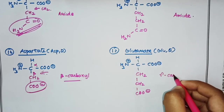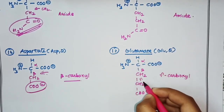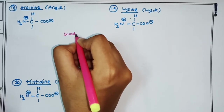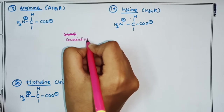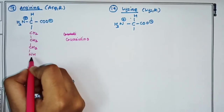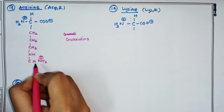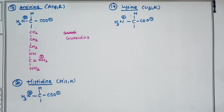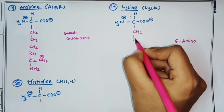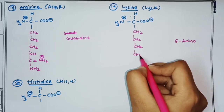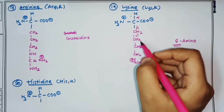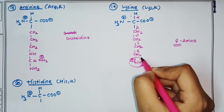The eighteenth amino acid is arginine, whose R group is a guanidino group: –CH₂–CH₂–CH₂–NH–C(=NH)–NH₂. The nineteenth amino acid is lysine, whose R group is an epsilon-amino group: –CH₂–CH₂–CH₂–CH₂–NH₃⁺. It is called epsilon-amino because the NH₃⁺ group is attached to the epsilon carbon (alpha, beta, gamma, delta, epsilon).